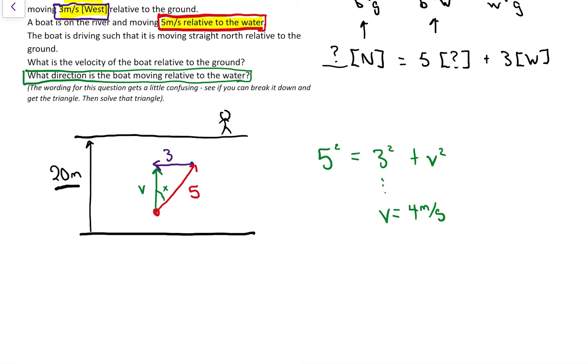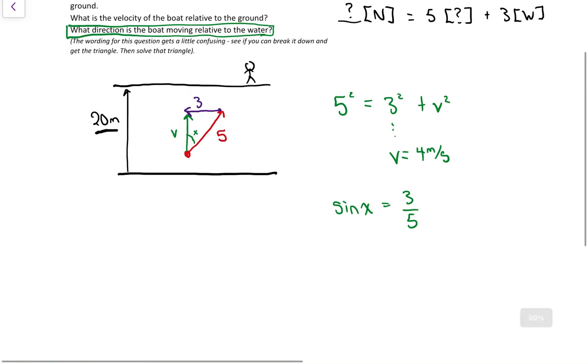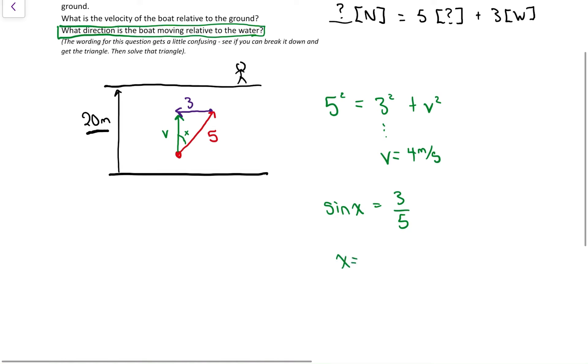That's the trig part. If I look at that colorful triangle, I'm curious about angle X. I know the opposite is 3 and the hypotenuse is 5. So that's a sine relationship. SOHCAHTOA, it's going to be 3 over 5. X is going to be the inverse sine of the 3 over 5. That works out to be 0.6. Inverse sine of that. I get that the angle is 37 degrees, give or take.